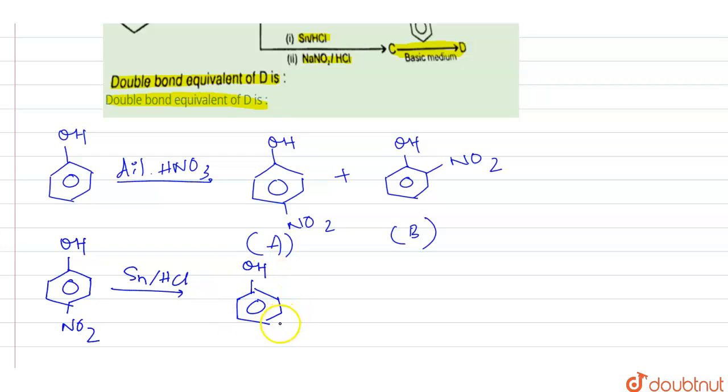This will convert the nitro group to amine, so this is NH2. Next it is reacting with NaNO2/HCl. Hence we know amine on reaction with NaNO2/HCl will be producing...